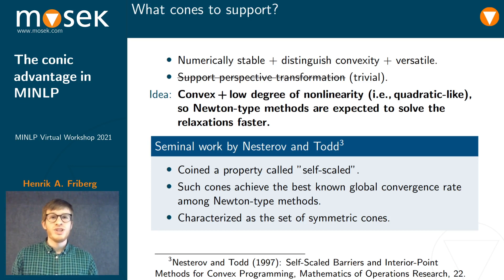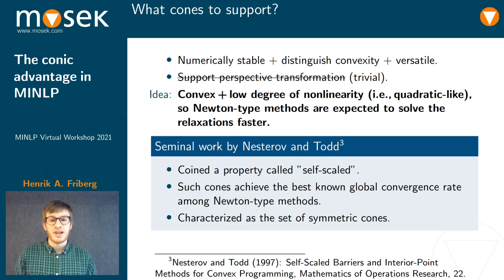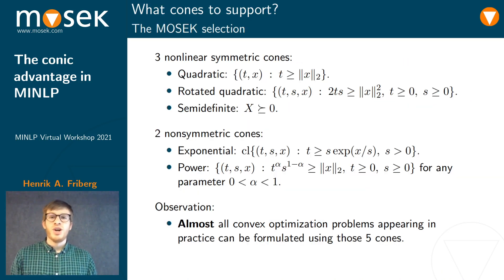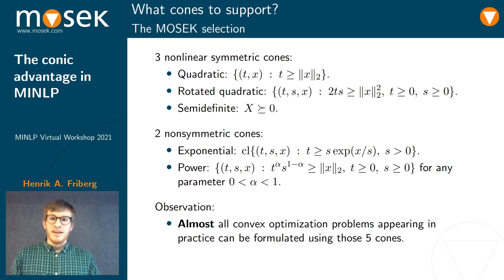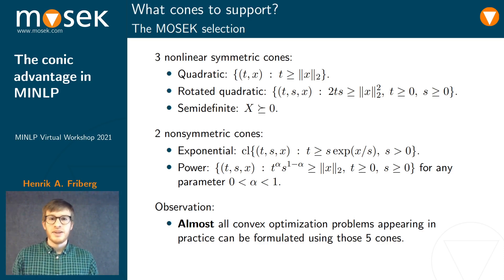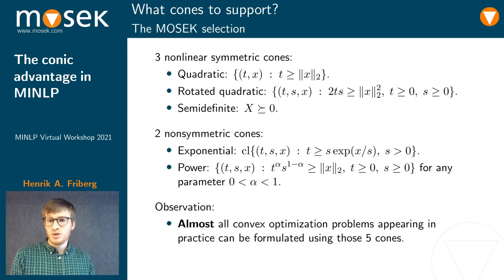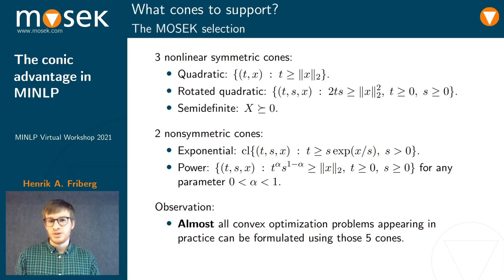And better yet, we don't need to look for cones that are self-scaled anymore, because they have all been characterized as the set of symmetric cones. In MOSEK, we support all real-valued symmetric cones. The nonlinear ones include the quadratic cone, which can be used to represent the 2-norm and the epigraph of the 2-norm, and the rotated quadratic cone, which is basically an orthogonal transformation of the quadratic cone with notational convenience.